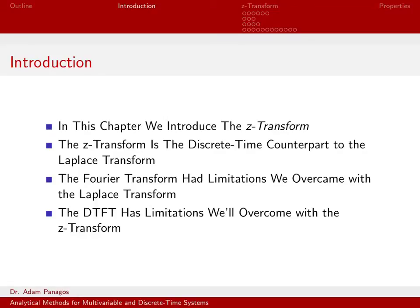We're now going to introduce what we call the Z-transform. We're very used to working in the transform domain. When working with continuous time signals, we talk about the Fourier transform and the Fourier series. When working with discrete time signals, we've talked about the discrete time Fourier transform and the discrete time Fourier series. We now introduce a new transform for discrete time signals called the Z-transform. In many ways, the Z-transform is the discrete time counterpart to the Laplace transform.